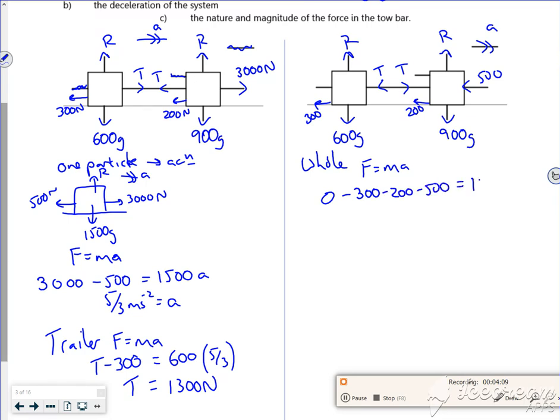That's equal to a combined mass of 1500a. So what have we got there? So I've got minus a thousand is 1500a, so minus 2/3 is a.